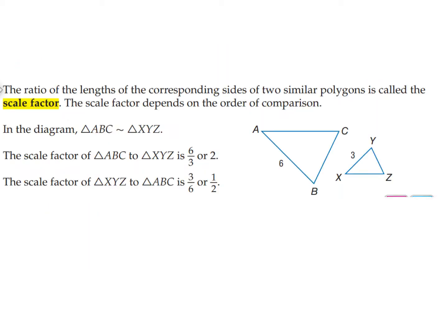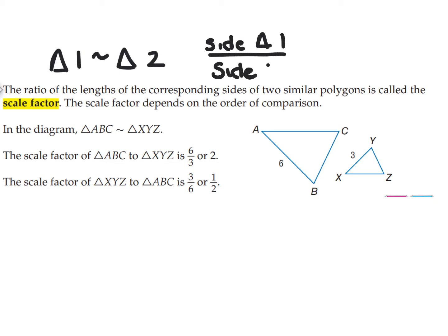What we can do to show the comparison of the size is we use what is called the scale factor, and it depends on the order that they are written. If I say triangle 1 is similar to triangle 2, you should be setting it up so it's a side of triangle 1 over a side of triangle 2, and we simplify the ratio. So for example, if ABC is first, the side length in ABC is 6, so 6 goes on top. And if XYZ is second, the side length in XYZ is 3, so 3 goes on the bottom. Notice the answers are reciprocals depending upon the order.